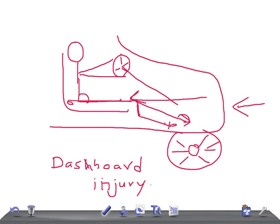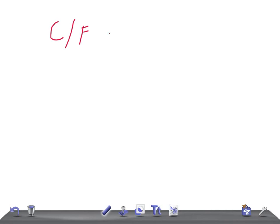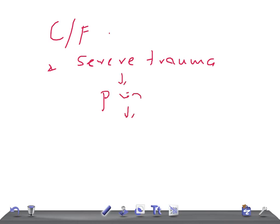In the USMLE examination, if they describe a patient who was driving a car, was in the front seat, or sustained any dashboard injury, then think of posterior dislocation of the hip. The posterior dislocation of the hip is really very easy to diagnose. The patient usually presents with severe trauma, severe pain, swelling, and deformity.